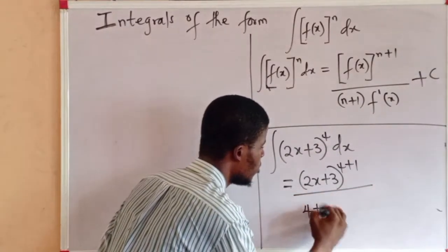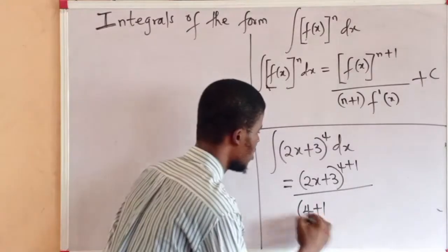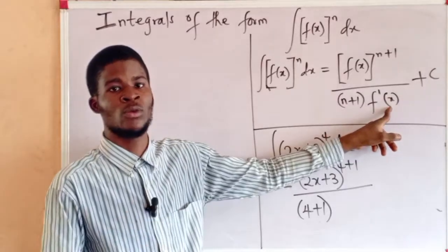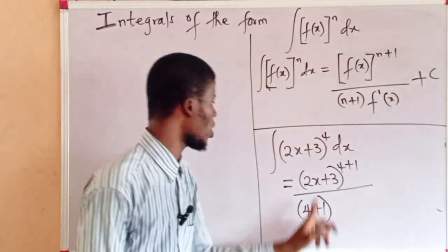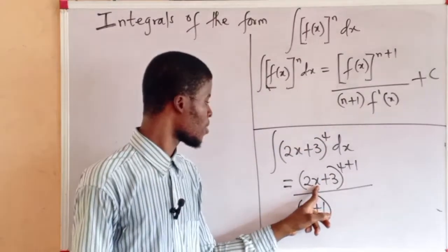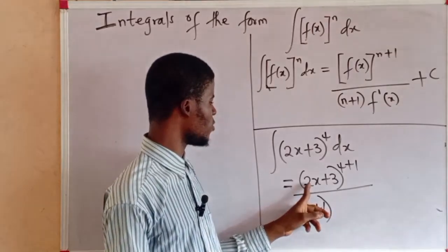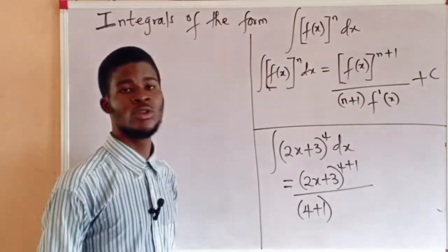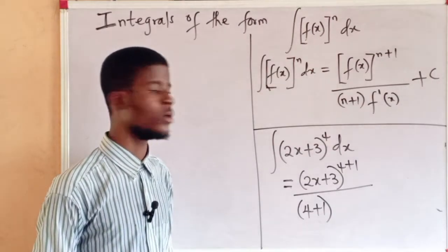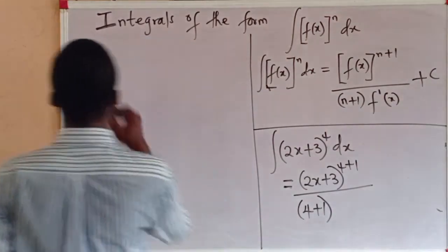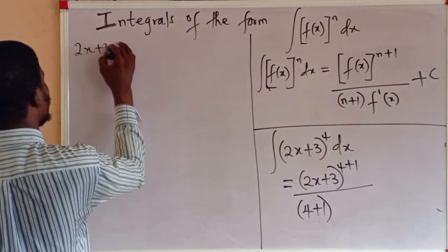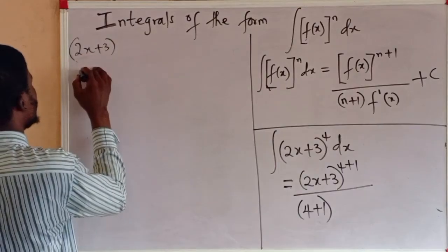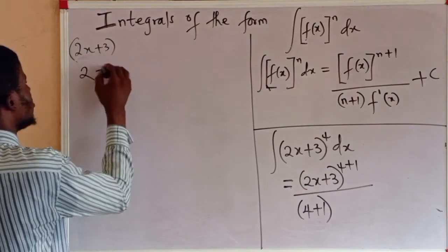Divided by 4 plus 1 times f prime of x, which is the first derivative of the function with respect to x. So we are going to differentiate this function now. What is the derivative of 2x plus 3 with respect to x? The first derivative is going to produce a 2. Differentiate 2x to get 2, differentiate 3 to get 0.